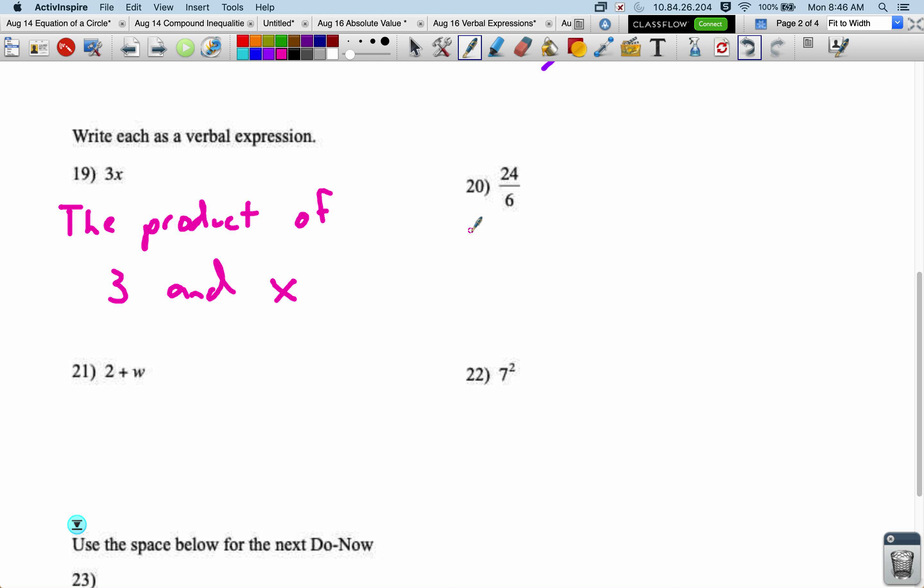Here we've got division, so a quotient. The quotient of 24 and 6. The sum of 2 and w, and this one is 7 squared.